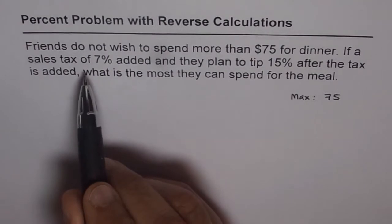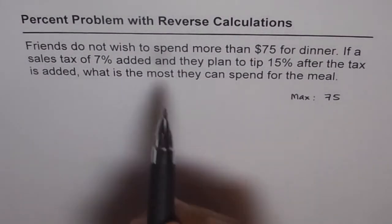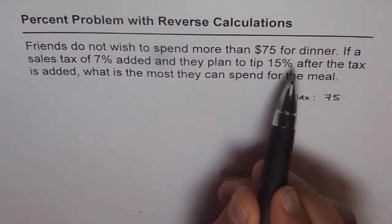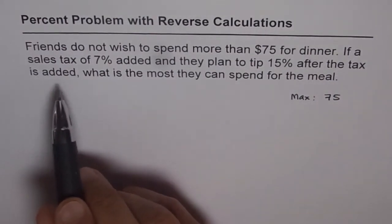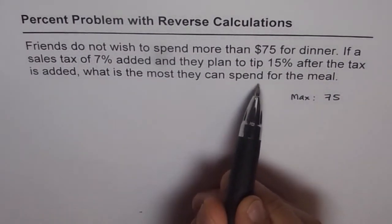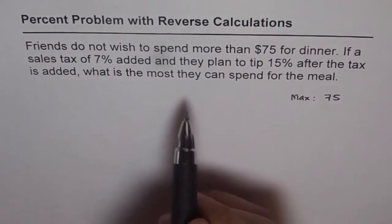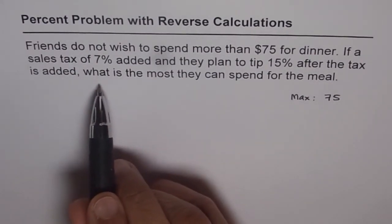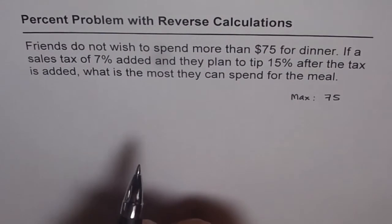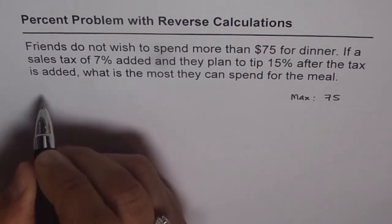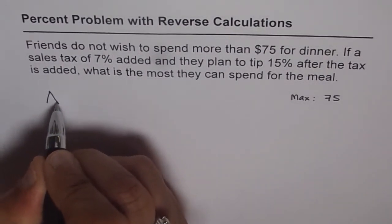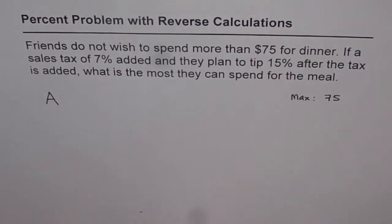If sales tax of 7% is added and they plan to tip 15% after the tax is added, what is the most they can spend for the meal? We don't know that, so let's call it A — that is the amount A they can spend at most.